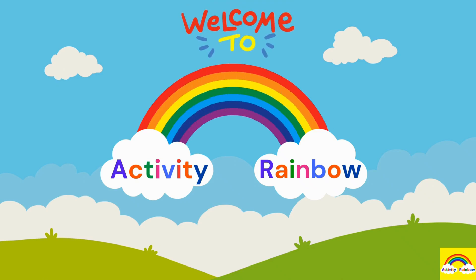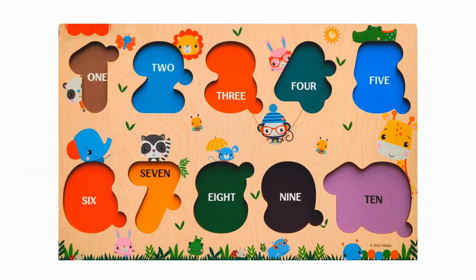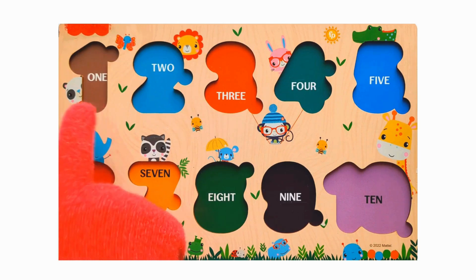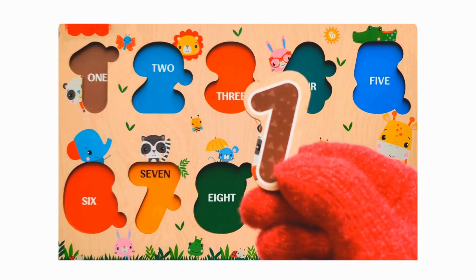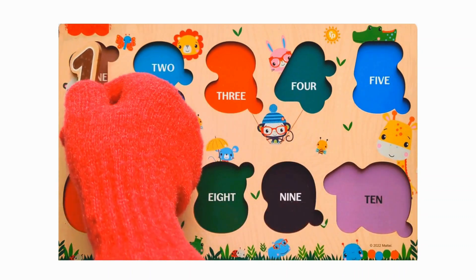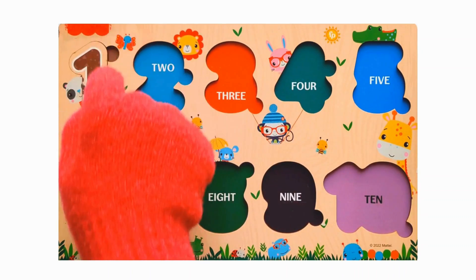Welcome to Activity Rainbow. Let's learn numbers. Let's get started. First number is Number 1. It's of brown color. 1.